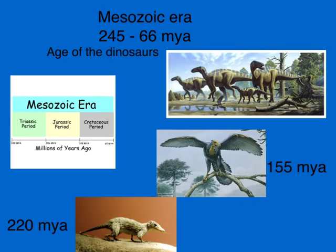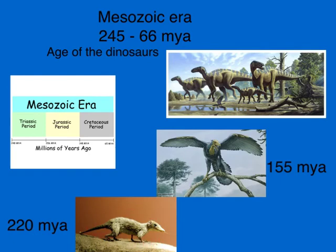The Mesozoic Era went from 245 million years ago to 66 million years ago — oftentimes described as the age of the dinosaurs. During this long period, the dinosaurs dominated the Earth. About 155 million years ago, dinosaurs evolved into the first bird, a funny-looking creature called Archaeopteryx. Also during this time, small mammals evolved — about 220 million years ago, little creatures began to evolve. These mammals were not very successful living alongside the dinosaurs, but they ended up being the survivors when the dinosaurs disappeared.